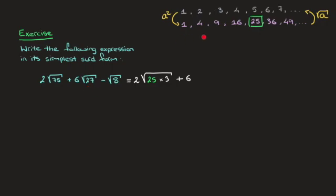Looking through our list of square numbers, we quickly see that the largest square factor of 27 is 9. And since 27 equals 9 times 3, we can write that the second term is 6 times the square root of 9 times 3.